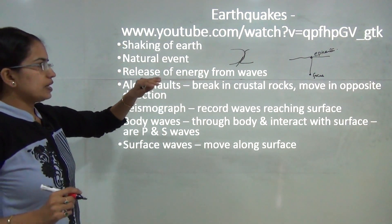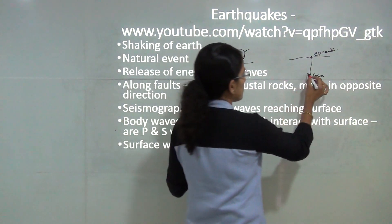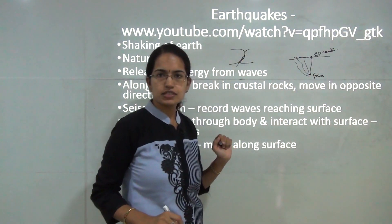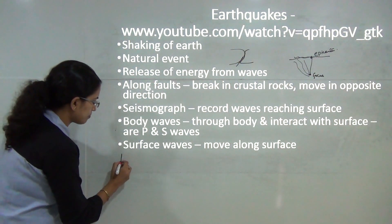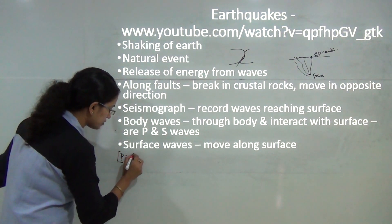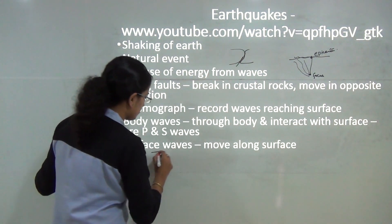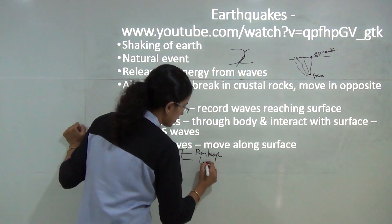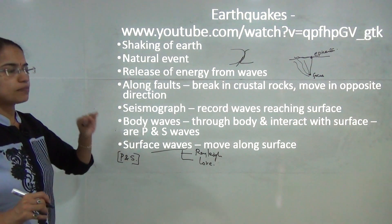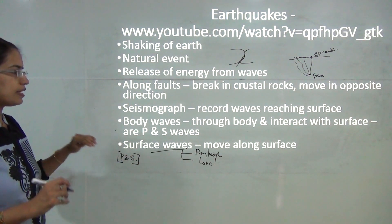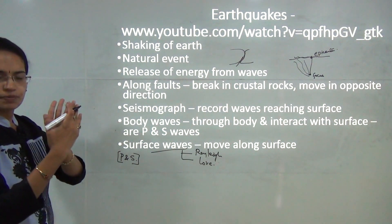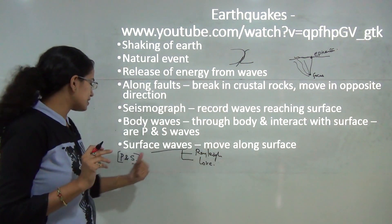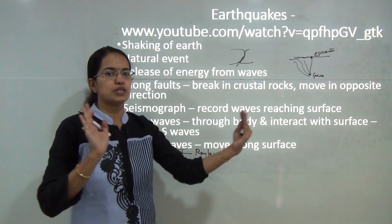Earthquake waves coming from the focus are called body waves, classified as P waves and S waves. Waves running on the surface are called surface waves or L waves or love waves. P waves are primary waves that move through compression and expansion — similar to a spring compressing and expanding — making them parallel to the direction of propagation. They are also known as compressional or longitudinal waves.